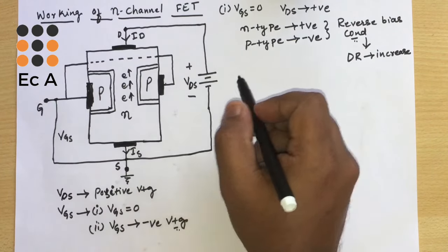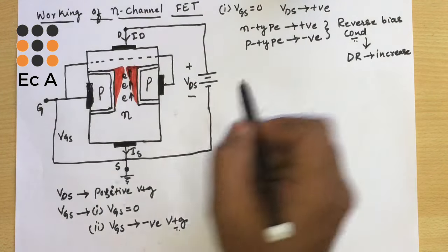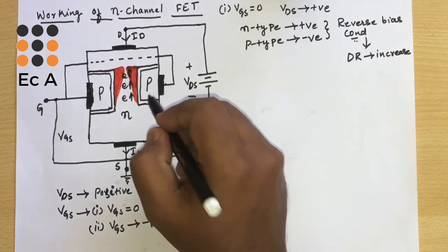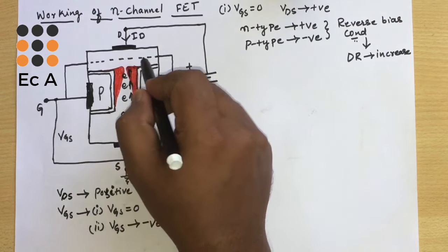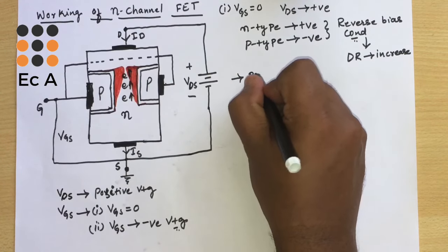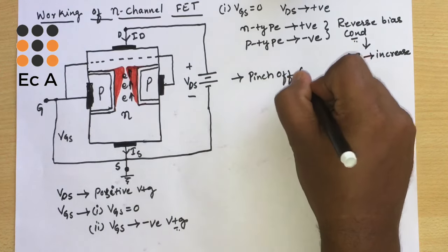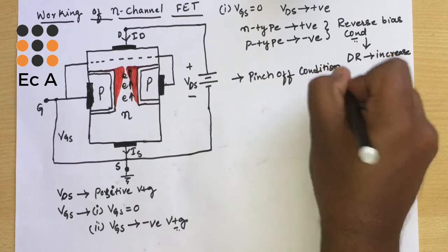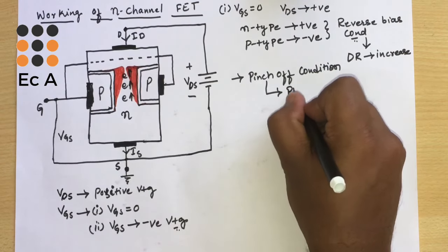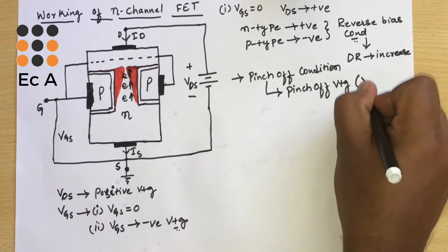As VDS is increased, the current ID will also increase and the depletion region towards the drain will also increase. At some point, both depletion regions appear to touch each other — this condition is called the pinch-off condition.